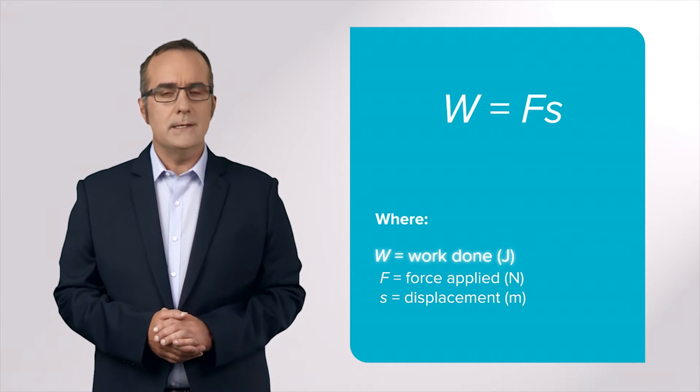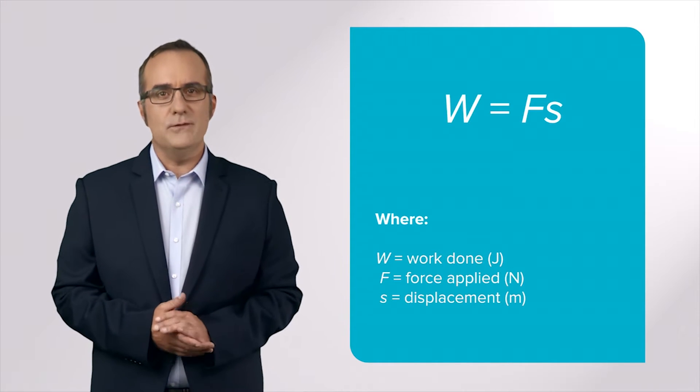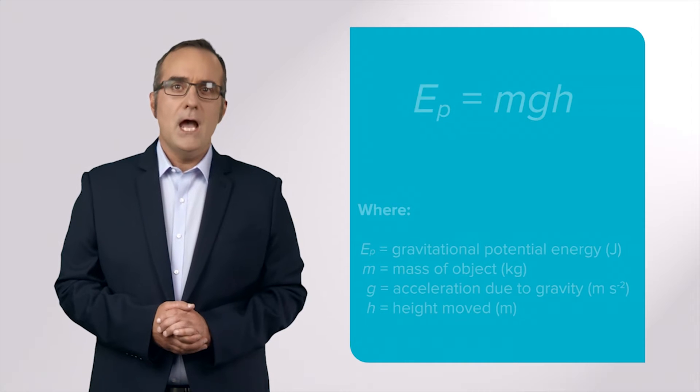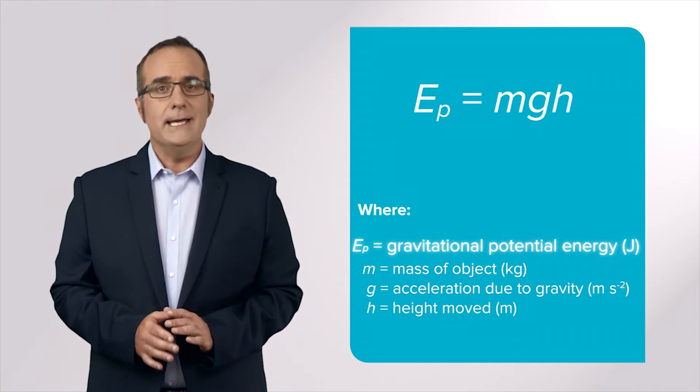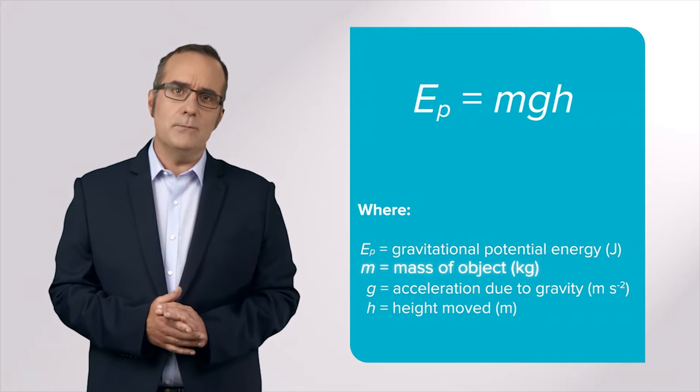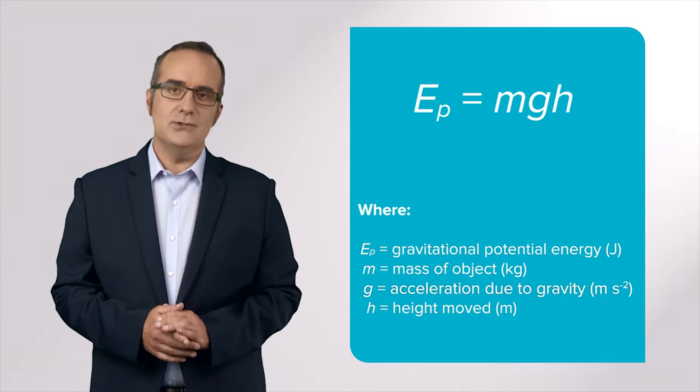Work is measured in joules, so this energy needs to be supplied by the object that is moving the object. When gravity is considered, gravitational potential energy is defined as the mass of the object multiplied by the height moved and acceleration due to gravity.